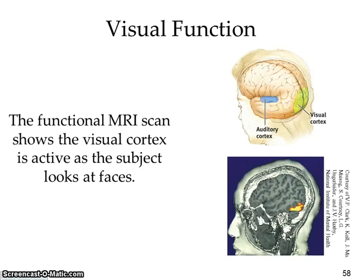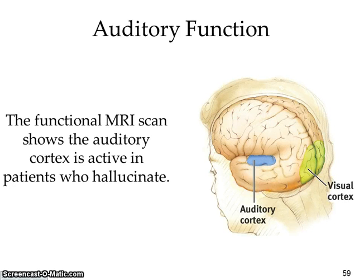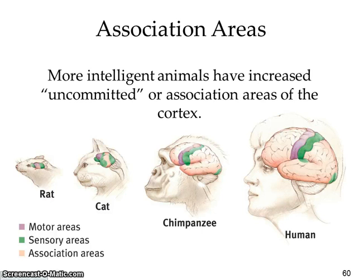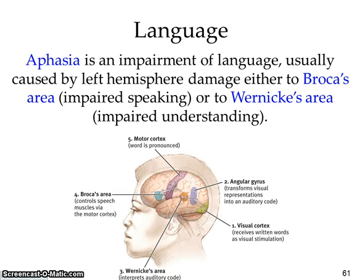A functional MRI shows the visual cortex active when you're awake. It can also show how someone hears something, even detecting activity in schizophrenic patients who are hallucinating. More intelligent animals have more association areas in their brain. Aphasia is an impairment of language usually due to left hemisphere damage — Broca's area affects speaking, while Wernicke's area deals with impaired understanding. Stroke patients often have Broca's area damage.